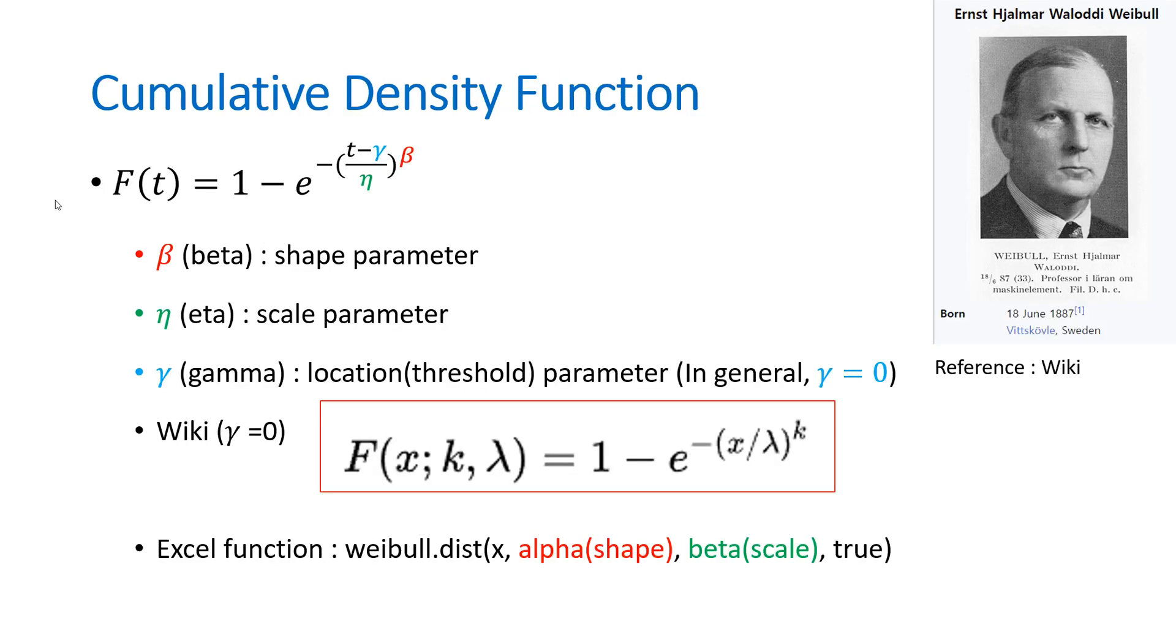This is cumulative density function for Weibull distribution. As you can see, there are three parameters: beta, eta, and gamma. We typically set gamma as zero because we can standardize time variable. So the most important parameters are beta and eta. Beta is shape parameter and eta is scale parameter.